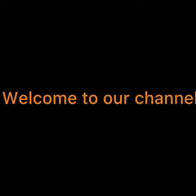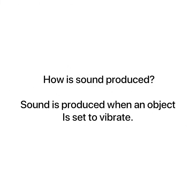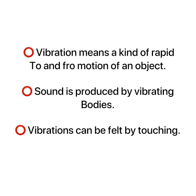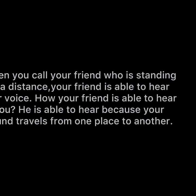Welcome to our channel. Today we are going to see about sound — how is sound produced. Sound is produced when an object is said to vibrate. Vibration means a kind of rapid to-and-fro motion of an object. Sound is produced by vibrating bodies. Vibration can be felt by touching.